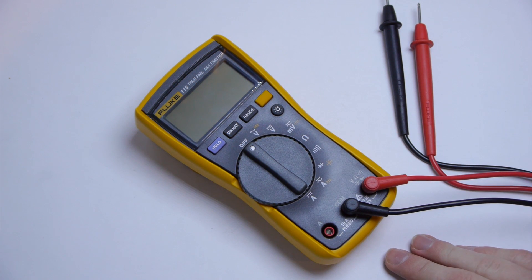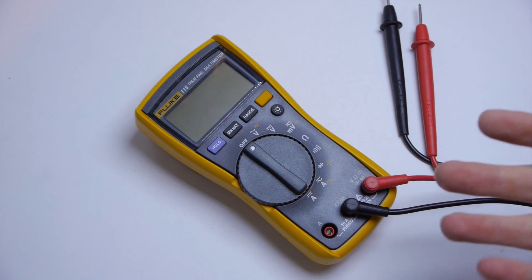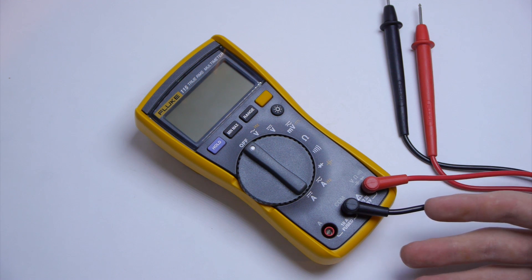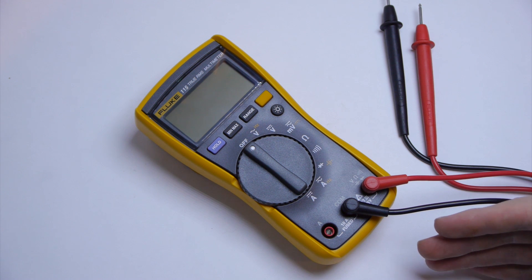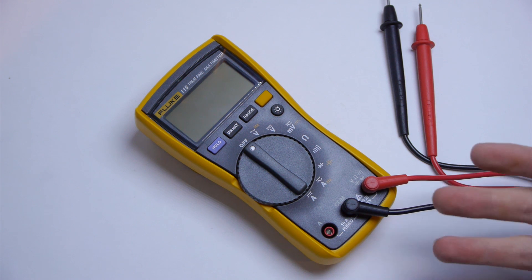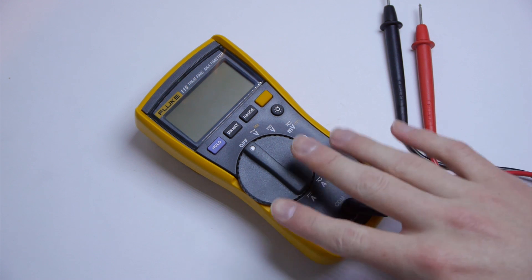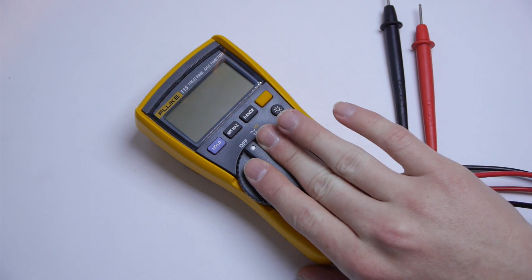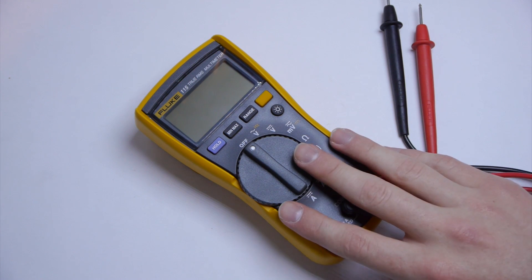For example, a lot of teams accidentally short their camera to their frame, and they get to a competition and fail inspection because there's continuity between the ground of the camera, or even the C-Rio, and the frame. And they can't test it because they don't have a multimeter. You can get one of these from Harbor Freight for literally free. There's no excuse not to have one.